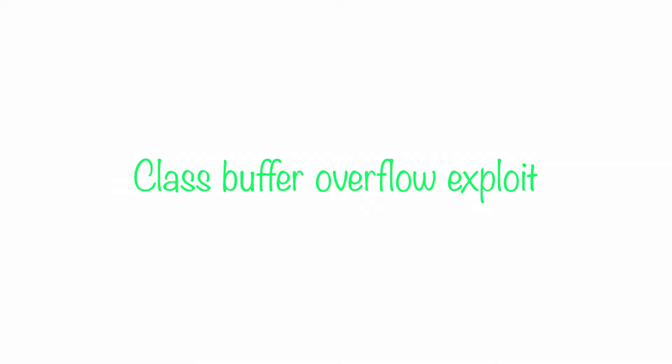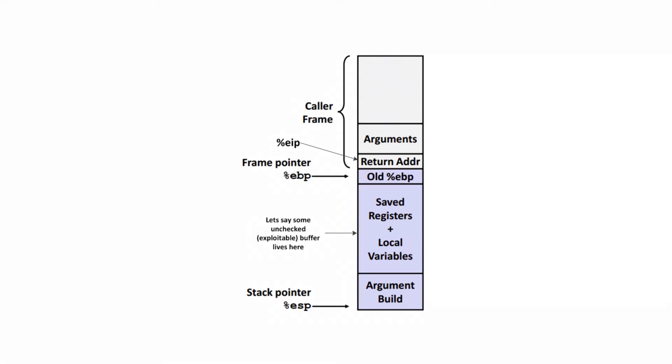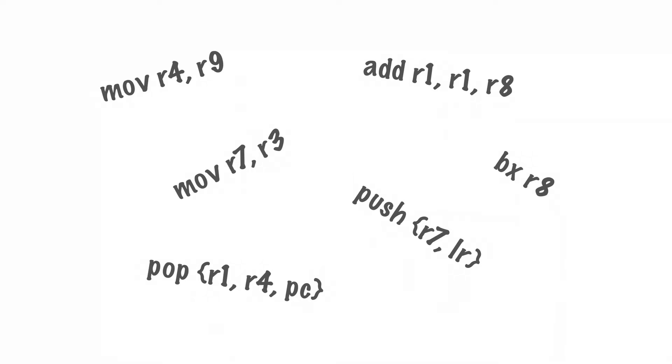Stack buffer overflow works by overwriting important values on the stack, one of which being the program's return address. When this value is popped back into the program counter, the program will jump to whatever you set it to, allowing you to change the program execution flow and jump to a new function. ROP is very similar — it does involve overwriting the return address — but rather than jumping to a single function, ROP allows you to chain together small parts of several different functions to complete a task.